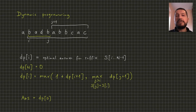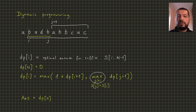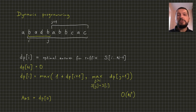That's because the time complexity of our program is not the best possible. We calculate the value of dp for each of the n positions in the string, but during each calculation we make another loop over position j. Therefore, the total time complexity of this solution is O(n²). So let's try to speed up our algorithm by getting rid of this loop over j.